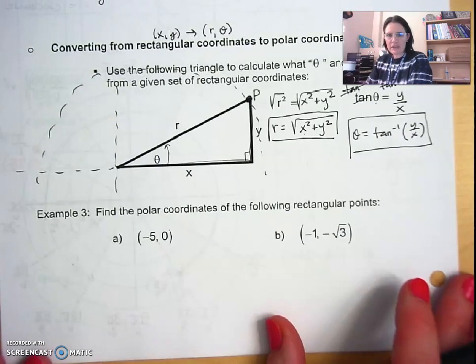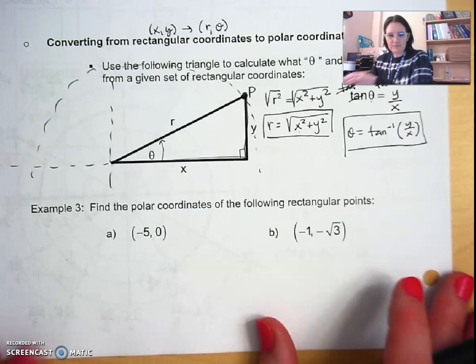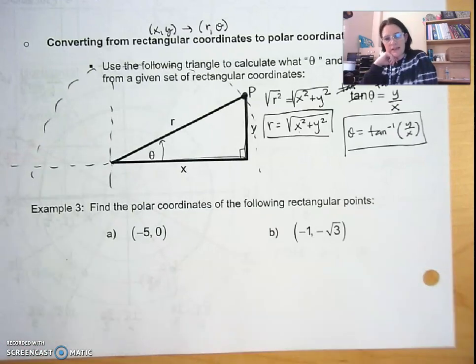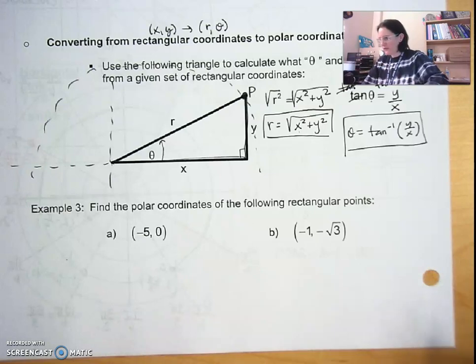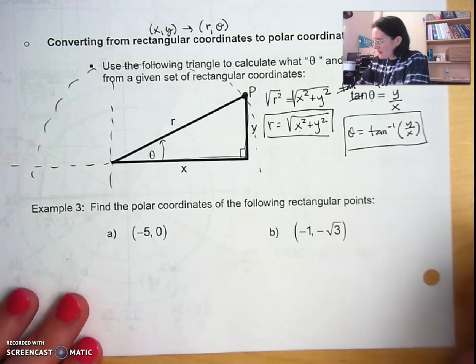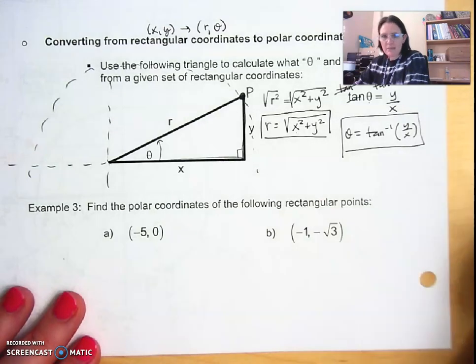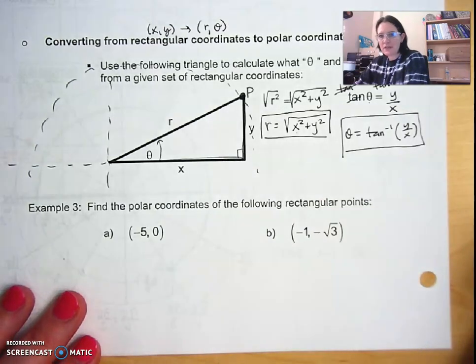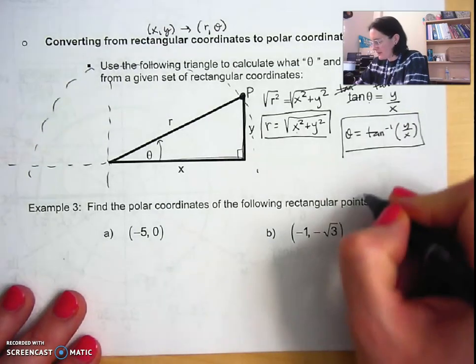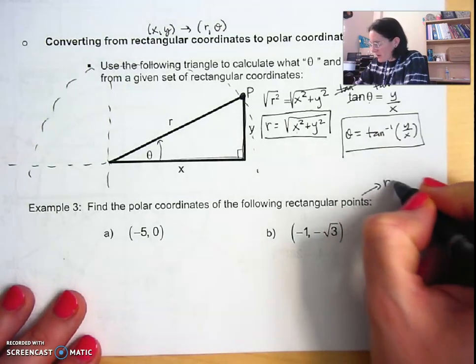So we have these two problems down here. The directions say to find the polar coordinates of the following rectangular points. I want you to add something here because your homework is going to ask you this and I want to be sure we practice it.